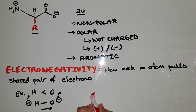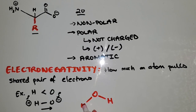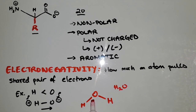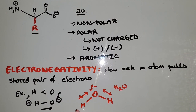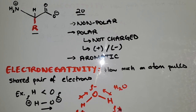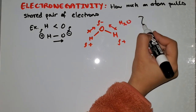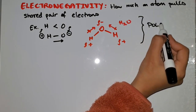For example, oxygen, which is very polar, is bonded to two hydrogens — this is H2O. Oxygen is more electronegative than hydrogens, so the electrons are being pulled towards the oxygen. You can tell that this molecule is polar: this side is partially negative and the hydrogens are partially positive. So H2O is a polar molecule.